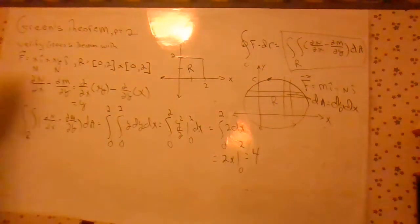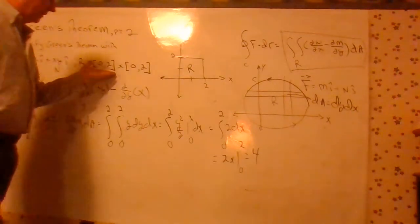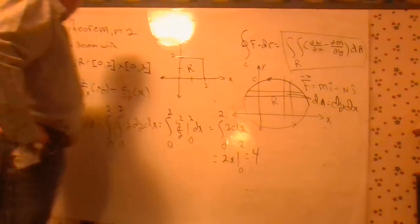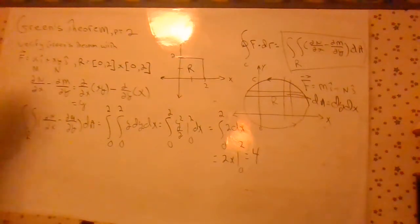So we have this f, xi plus xy j, and this Cartesian product, which is basically the square. And first of all, we're going to calculate partial of n with respect to x minus partial of m with respect to y. Here's what m and n are. m is x, n is xy.